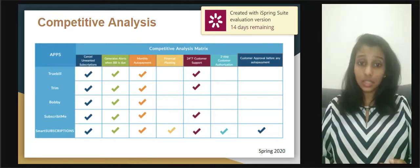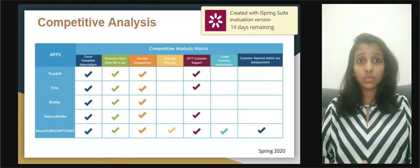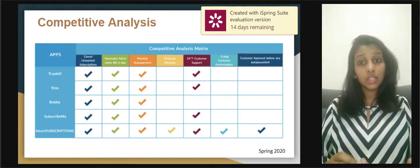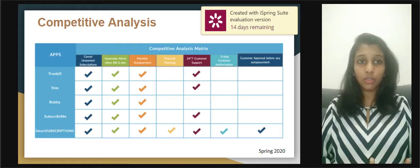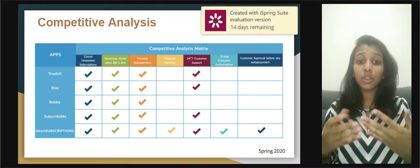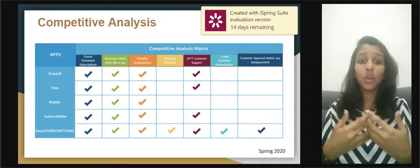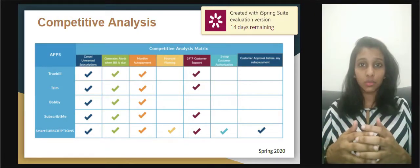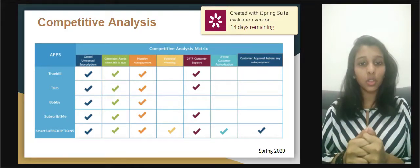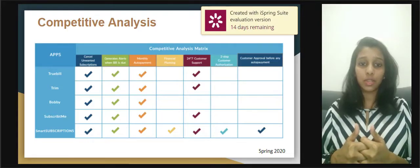With the number of online paid subscription services increasing year over year, Smart Subscription would be an ideal solution to improve the overall experience of customers and provide service providers with statistical data for improvements. Financial planning, two-step customer authorization, customer approval before any auto payment, reductions, custom notifications, and alerts are some of the additional features provided by our app over existing competitors. With good understanding of business and extensive research on customer segments and behaviors, we believe we are well-equipped with all the metrics to pursue this opportunity further.